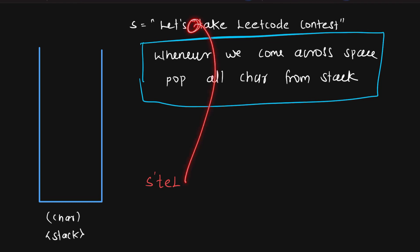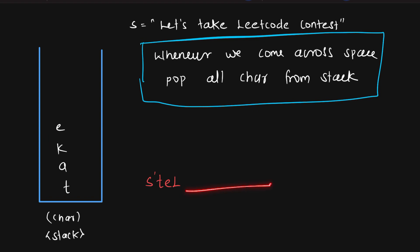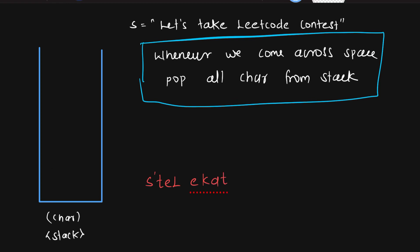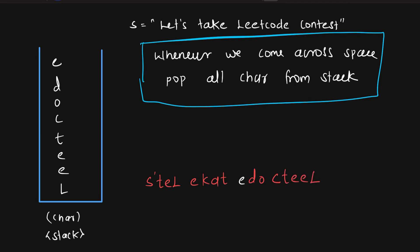Now my stack is empty. Since I came across the space, I add the space to my answer. I move to the second word 'take' and push t, a, k, e into the stack. When I hit the next space, I pop: e, k, a, t and attach it to my answer. Then I move to 'leetcode', pushing l, e, e, t, c, o, d, e. When I hit the space, I pop: e, d, o, c, t, e, e, l.